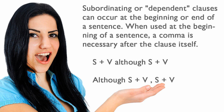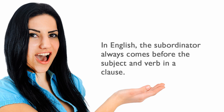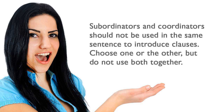The patterns are: subject and verb, although, subject and verb — or — although, subject and verb, comma, subject and verb. In English, the subordinator always comes before the subject and verb in a clause. Subordinators and coordinators should not be used in the same sentence to introduce clauses. Choose one or the other, but do not use both together.